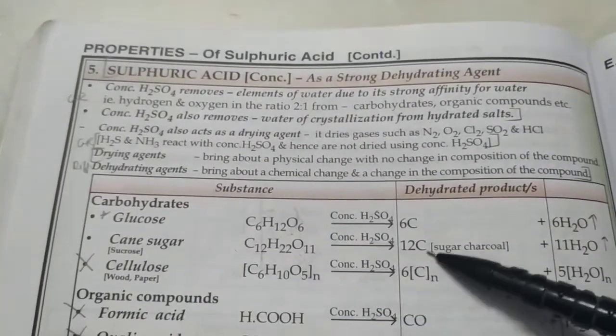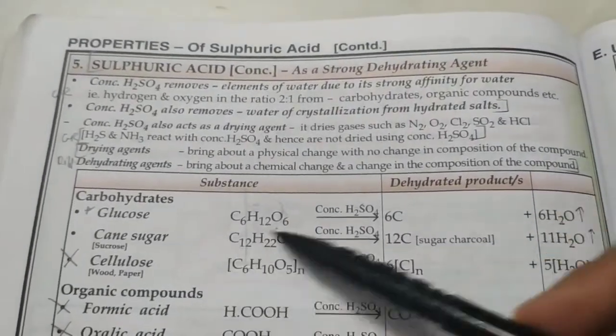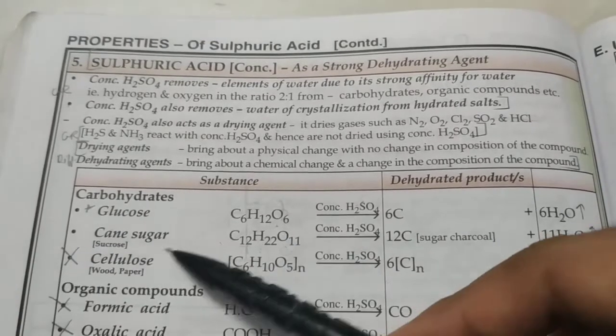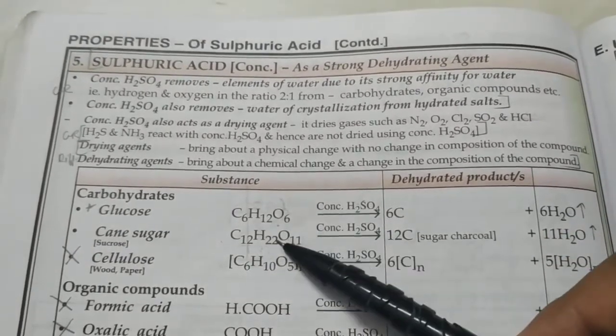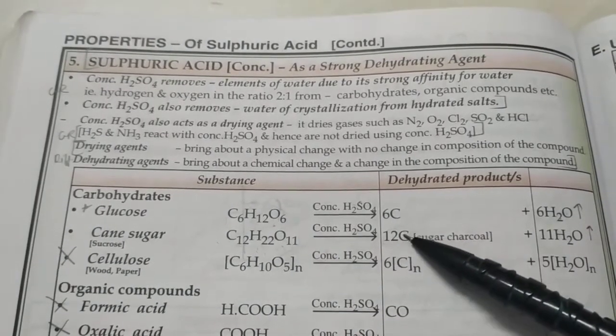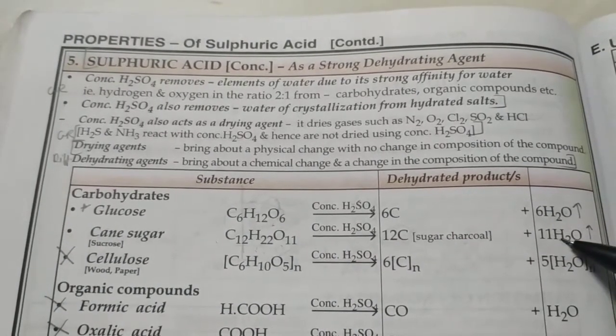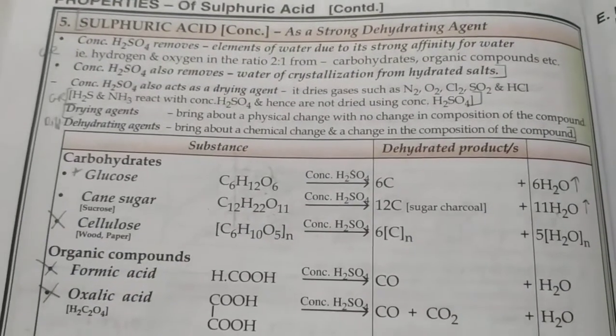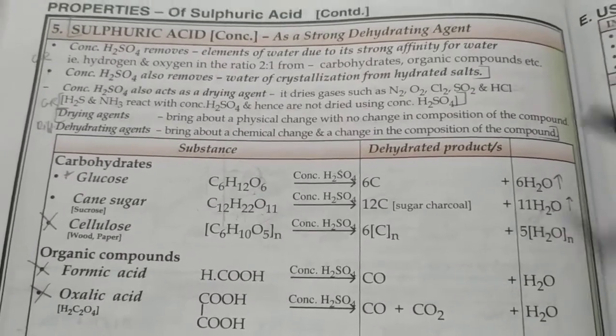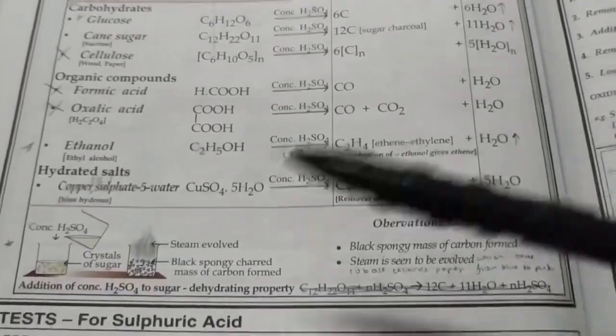The observation: this is normal sugar, the kitchen sugar sucrose. When we add conc sulfuric acid to it, we will see some black mass left behind which is sugar charcoal, and steam being released which would turn cobalt chloride paper from blue to pink, proving that it is moisture. These are the observations.